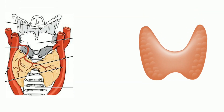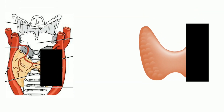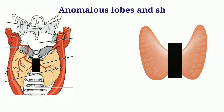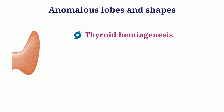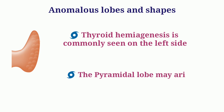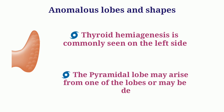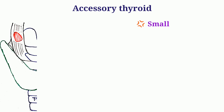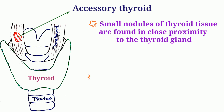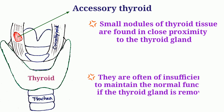When the lateral lobes or isthmus of the thyroid gland go missing, these are called anomalous lobes and shapes of thyroid. Thyroid hemiagenesis is commonly seen on the left side. The pyramidal lobe, which often arises from the upper aspect of the isthmus, may arise from one of the lobes or may even be detached from the thyroid. Accessory thyroids are small nodules of thyroid tissue found near the actual thyroid gland, but they are too small to maintain normal function if the gland is removed.